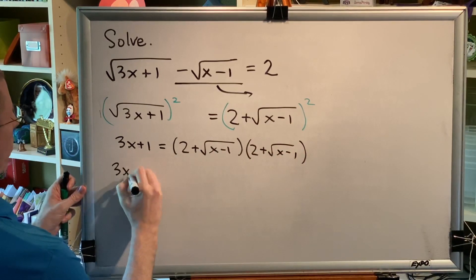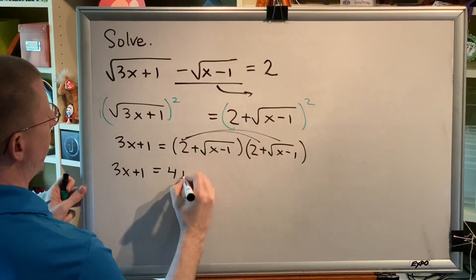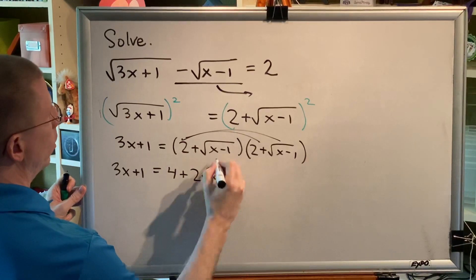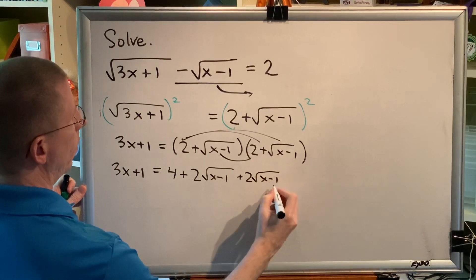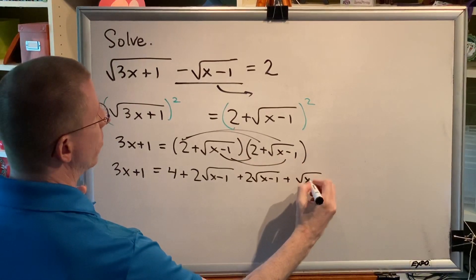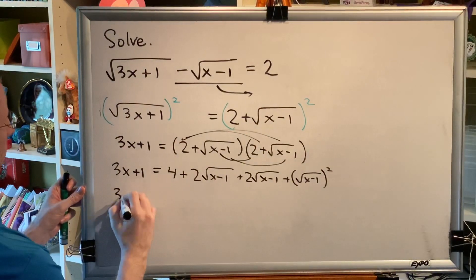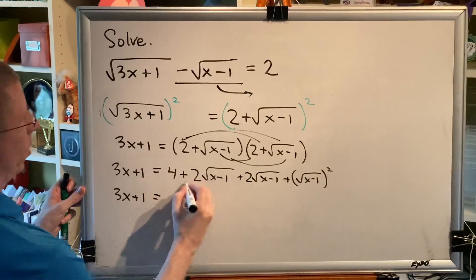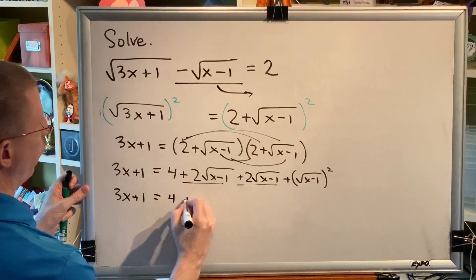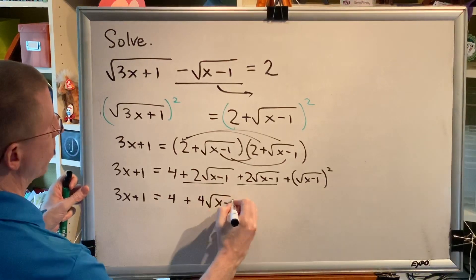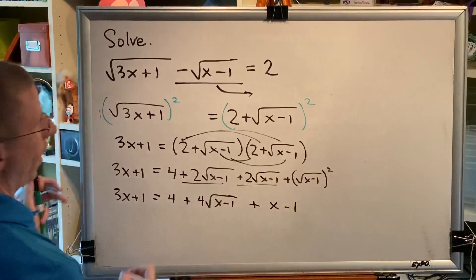So I'm going to spend a little time on the right-hand side here. 2 times 2 is 4. 2 times the radical would be plus 2 radical. The radical times 2 would also be plus 2 radical. And the radical times itself could be written as that. Now we're going to do a little radical algebra. Combining the two like radicals together by adding their coefficients. We get 4 plus 4 radical, x minus 1, plus square and square root cancel, leaving me x minus 1.